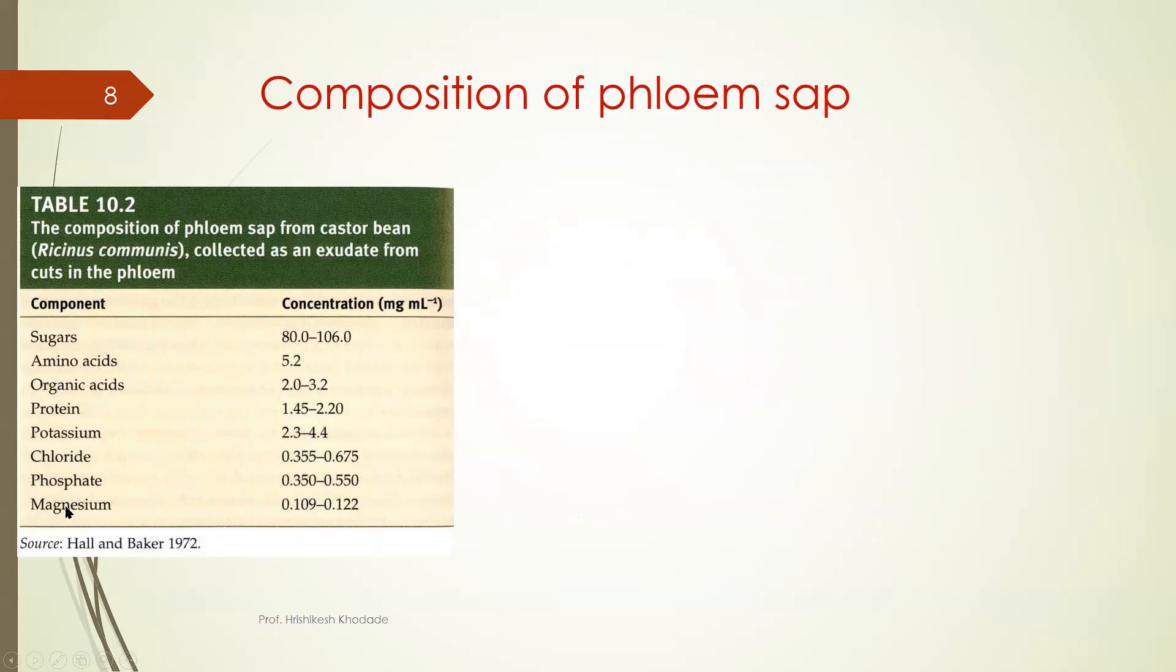protein, potassium, chloride, phosphate, manganese. At least five you have to remember but should not forget sugar. Because sugar is the main 80 to 106 milligram per liter composition because they comprise most section of sugar. After that amino acid.